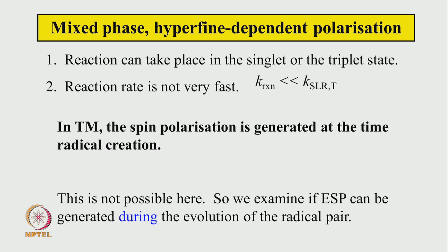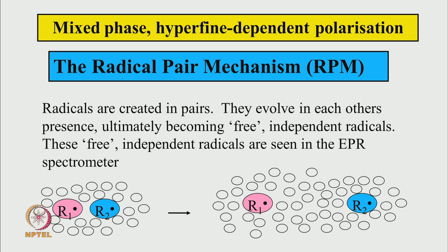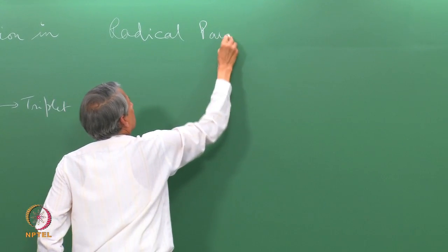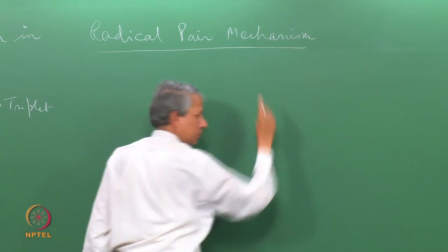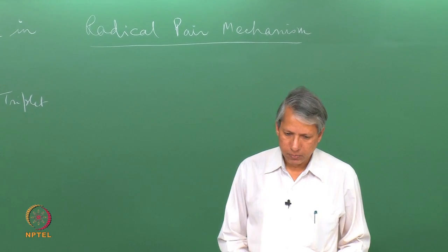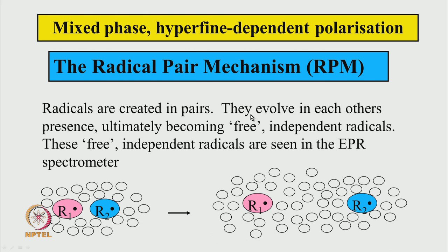We need to understand how radicals evolve after they are produced. This mechanism is called the radical pair mechanism. The key is that radicals are created in pairs and evolve in each other's presence. When created in solution, they are surrounded by solvent molecules and influence each other at close range. After some time, once they separate and each becomes solvated, I call them free from each other's presence. The EPR spectrometer sees these separated radicals.